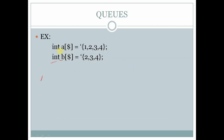Let us see an example of a queue. Here int is a data type of the queue, and a is the name of the queue, followed by dollar sign ($). This represents a queue. Here we have inserted four elements: 1, 2, 3, and 4. The size of the queue will be 4. There is no need to define the size — it will automatically expand according to the elements we are inserting in it.